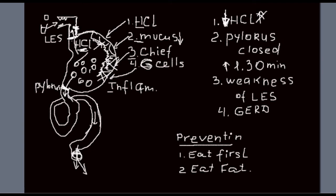In a nutshell, what happens: alcohol will damage mucus, as a result, inflammation sets in. As a result, you will produce less hydrochloric acid. It means that pylorus will stay closed. When pylorus stays closed longer than 1 hour 30 minutes, low esophageal sphincter will become weak. Weakness in the low esophageal sphincter means food and hydrochloric acid will go into esophagus and create burning sensation.